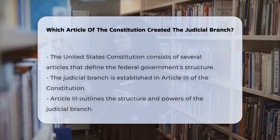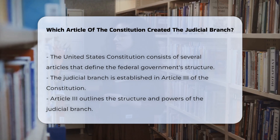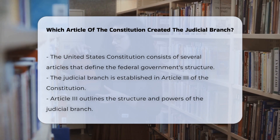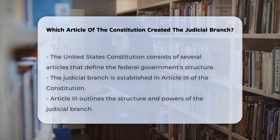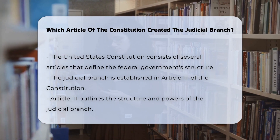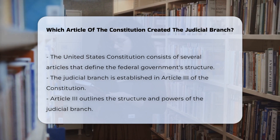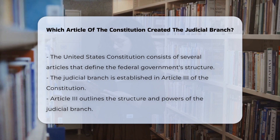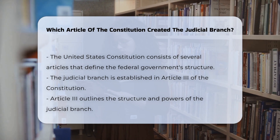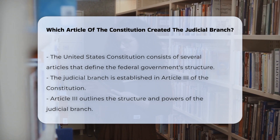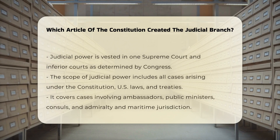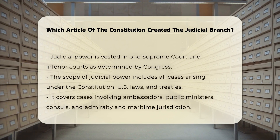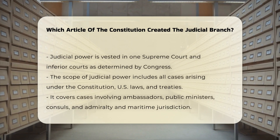This article outlines the structure and powers of the judicial branch. It begins by stating that the judicial power of the United States shall be vested in one Supreme Court and in such inferior courts as the Congress may from time to time ordain and establish.